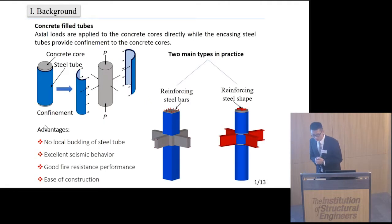This study is focused on concrete-filled tubes, where the axial loads are applied to the concrete cores directly, while the encasing steel tubes provide confinement to the concrete cores. As shown in this figure, the steel tube is deliberately made slightly shorter than the concrete core to avoid carrying direct axial loads.